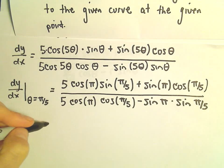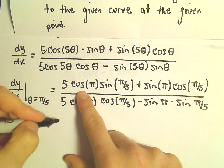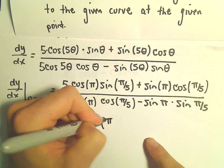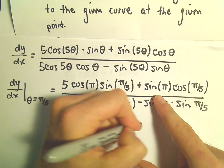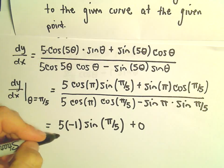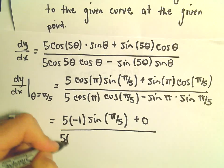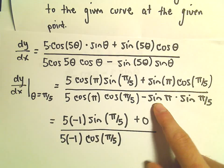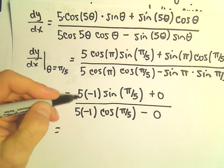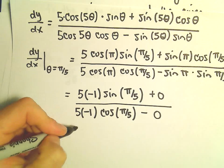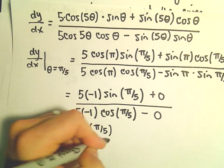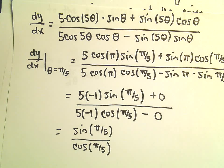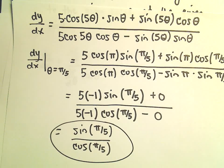Now let's evaluate. Cosine of π equals negative 1, and sine of π equals 0, so that eliminates several terms. In the denominator, 5 times cosine of π is negative 1, times cosine of π/5, and the sine of π term is 0. So we've got negative 5 over negative 5 — we can cancel those out — leaving us with sine of π/5 over cosine of π/5. You could plug this into a calculator, but that is the slope of our tangent line.